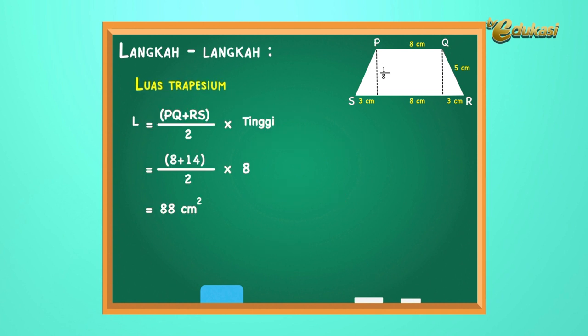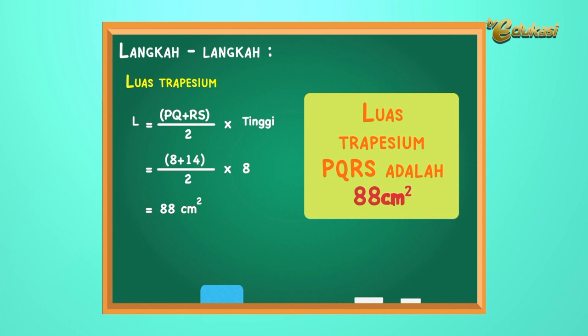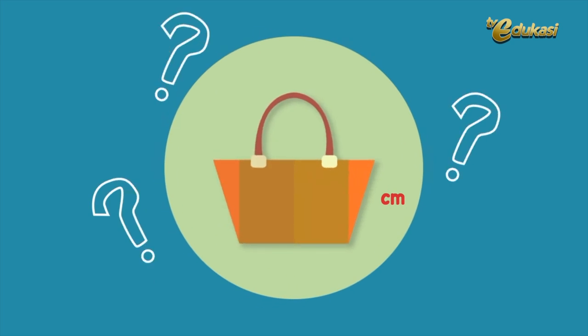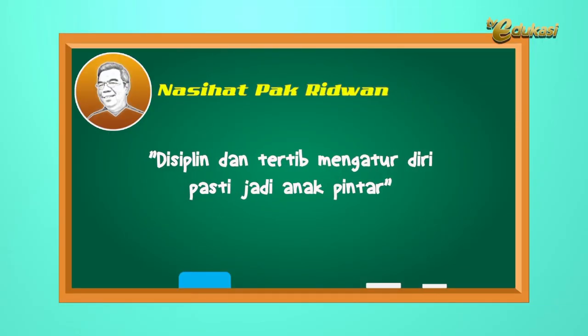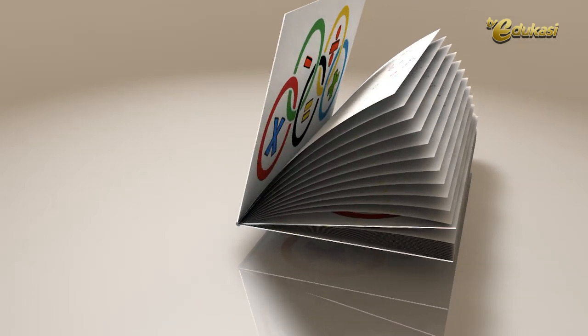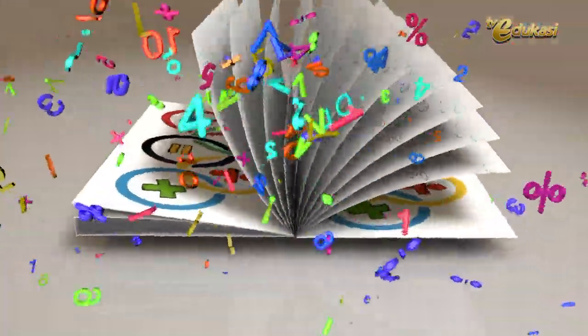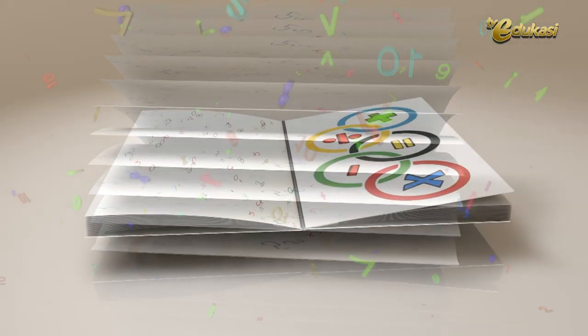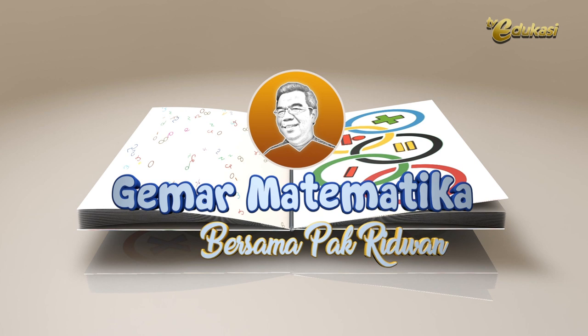Kesimpulan: jadi, luas trapezium PQRS adalah 88 cm persegi. Tentu kalian bisa menjawab soal yang disajikan di awal. Ingat, belajar Matematika bersama Pak Ridwan membuat Matematika menjadi lebih mudah. Bagaimana, kalian bisa menjawab soal?